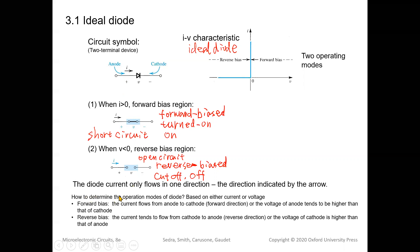How do we determine the operation mode of a diode? It can be based on either current or voltage. For forward bias, the current flows from anode to cathode — the positive direction — or equivalently the voltage of the anode is higher than that of the cathode. For reverse bias, the current tends to flow from cathode to anode, or the voltage of the cathode is higher than that of the anode.